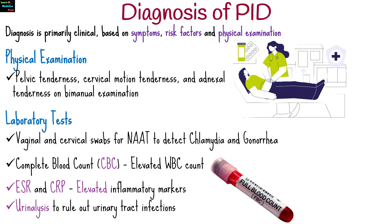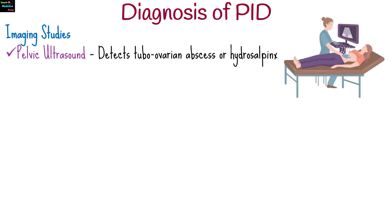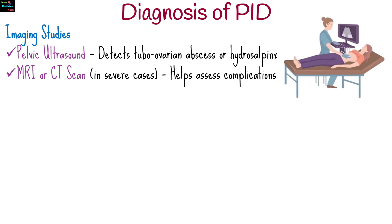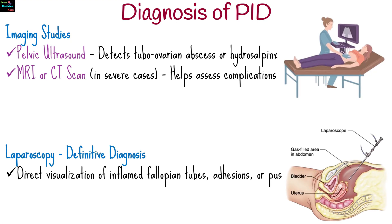Urinalysis is performed to rule out urinary tract infections. Pelvic ultrasound detects tubo-ovarian abscess or hydrosalpinx. MRI or CT scan in severe cases helps assess complications. Laparoscopy may help in direct visualization of inflamed fallopian tubes, adhesions, or pus.